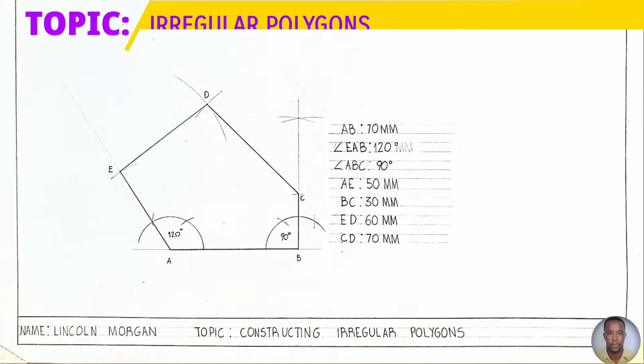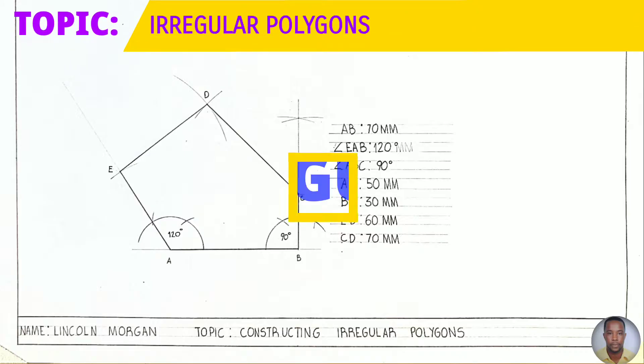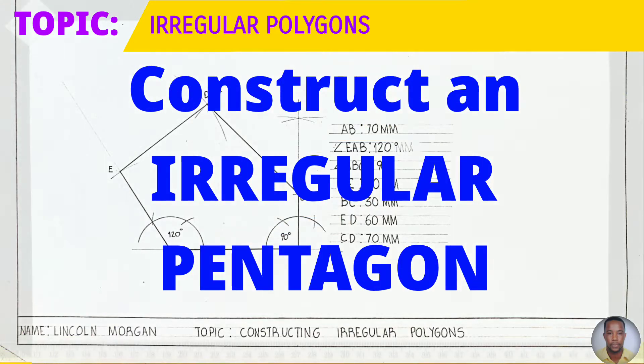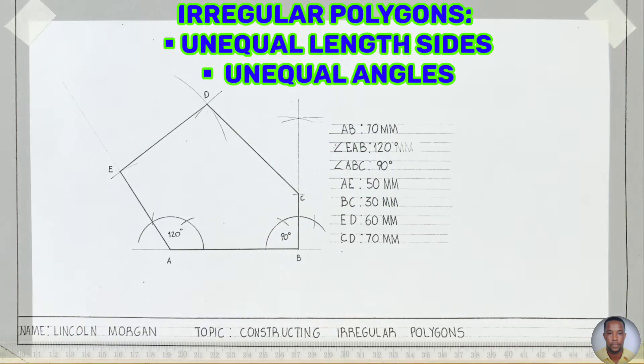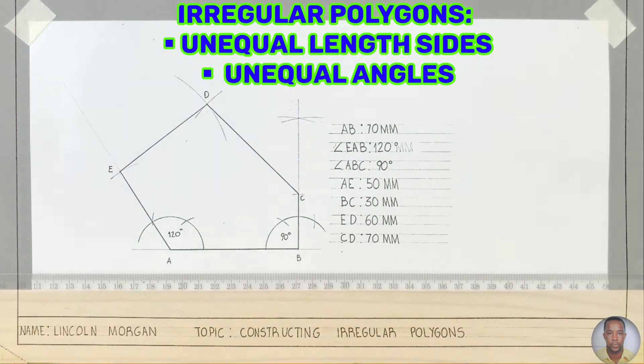Today from the topic irregular polygons, I'll be showing you how to draw an irregular pentagon. Irregular polygons consist of unequal sides and unequal angles.